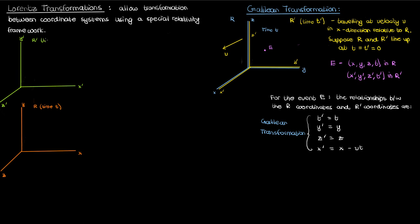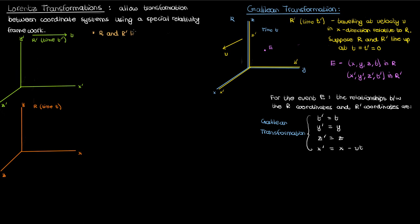To perform this derivation, let's take the same reference frames r and r', with r' once again moving at velocity v relative to r in the x direction. At time 0 we reset the clocks in both reference frames and line up the reference frames at that time 0. In this drawing I've shown r and r' vertically displaced from each other just for ease of depiction, but you can imagine that r and r' are actually lined up at time t equals 0, and r' is only moving in the horizontal x direction.